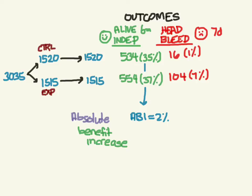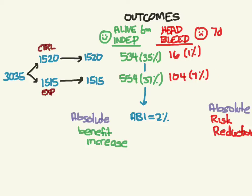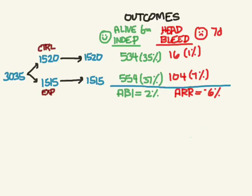For the harm side, the absolute risk reduction is the control event rate minus the experimental event rate — which gives us negative 6%. That means the treatment actually increased the risk of bleeding. So the absolute benefit increase is 2% and the absolute risk reduction is negative 6% — it really depends on how you frame these numbers. Those were the absolute parameters; now let's look at relative parameters.